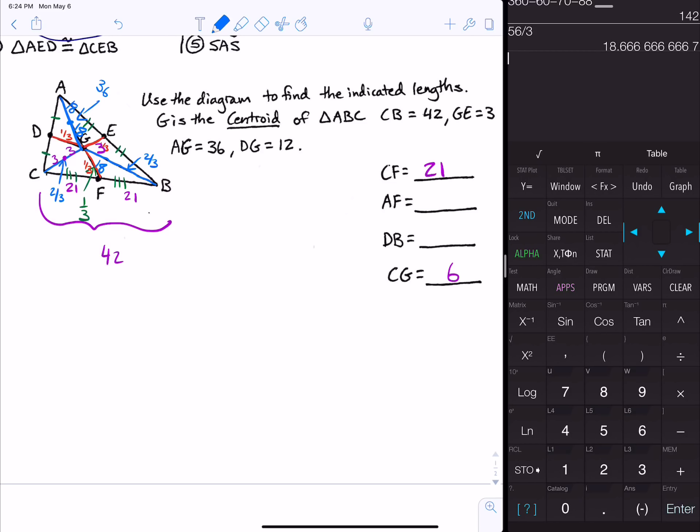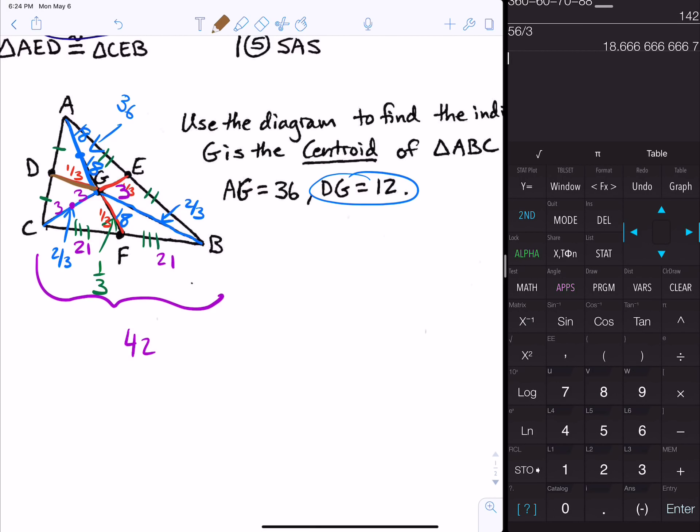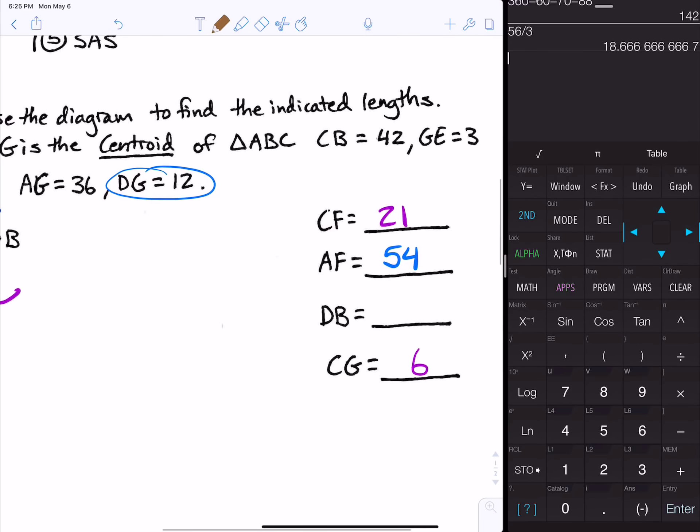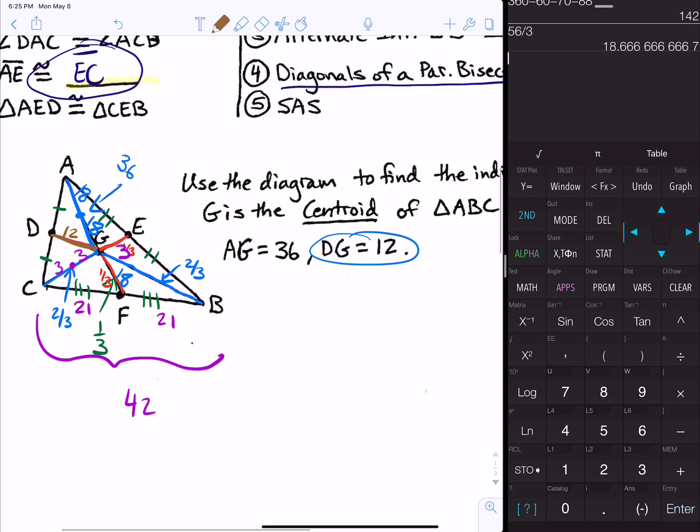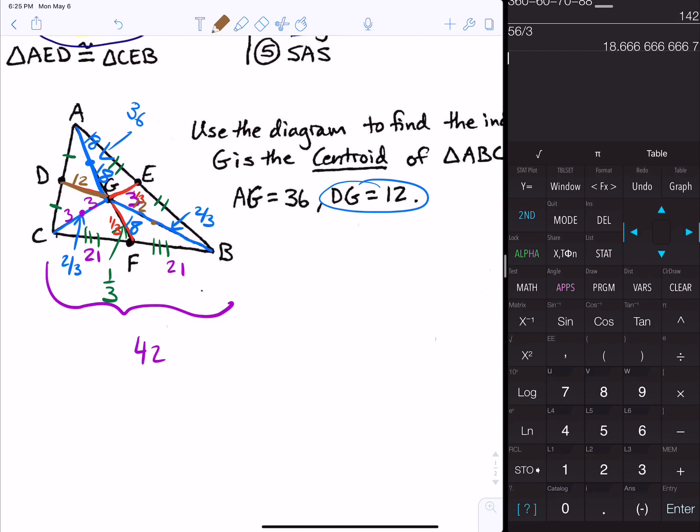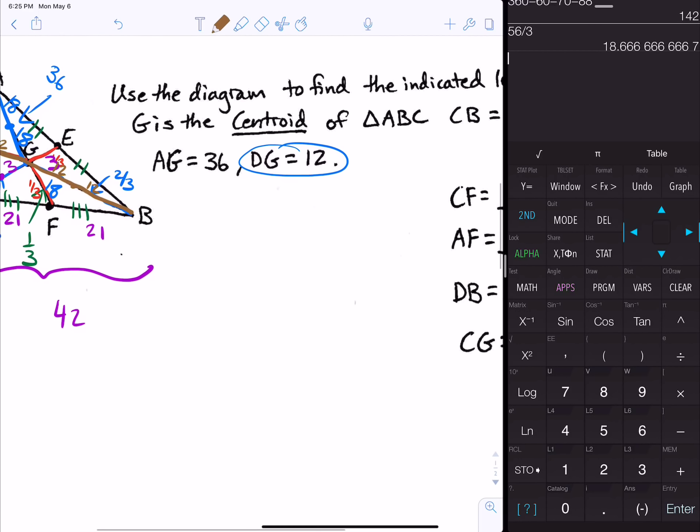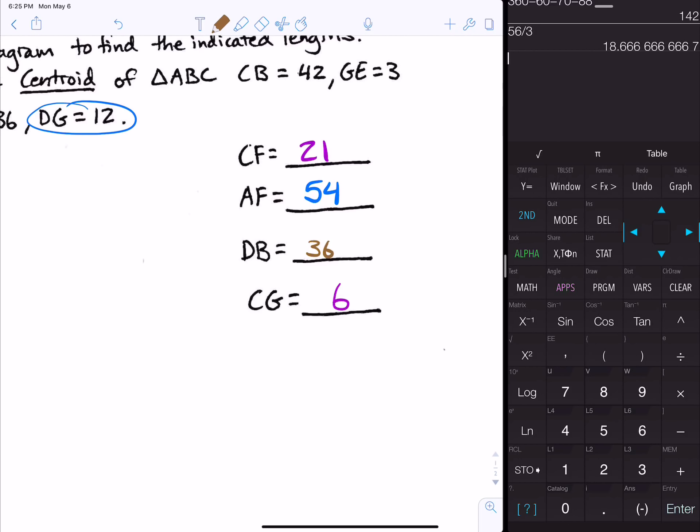Then DB is the total. They gave us DG is 12, which is the smaller part of the median DB. They want you to find DB, which is the total. There are three pieces of this median that all equal 12, so the total is 12 plus 12 plus 12, or 12 times 3, which would be 36.